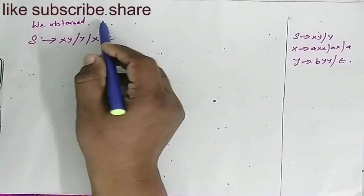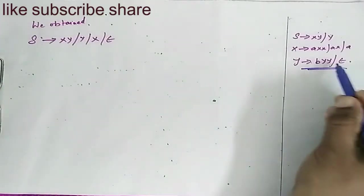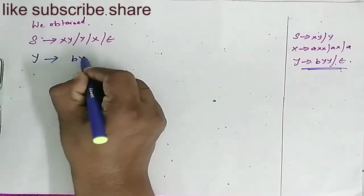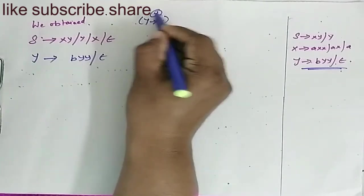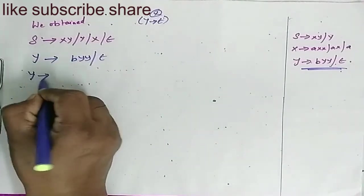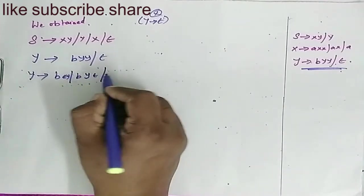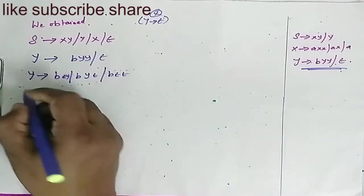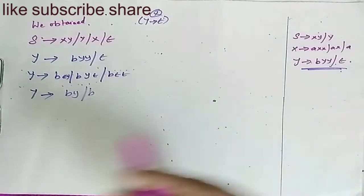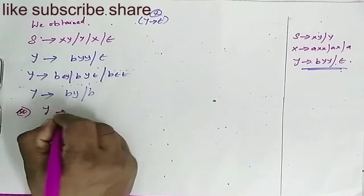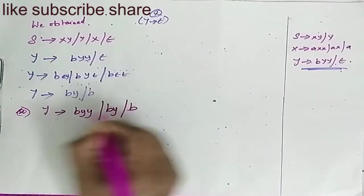When eliminating Y tends to epsilon, we also have the production Y determines BYY slash epsilon. Substituting epsilon for Y in BYY gives multiple combinations, which simplify to BY slash B. So Y becomes BYY slash BY slash B.